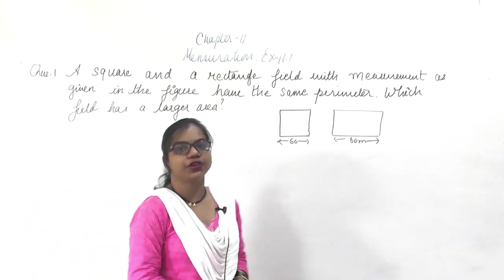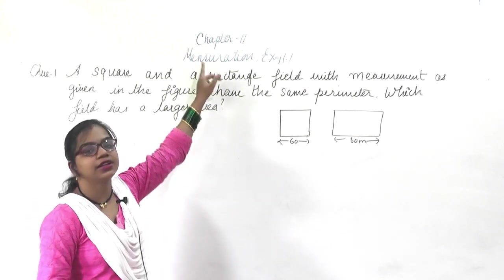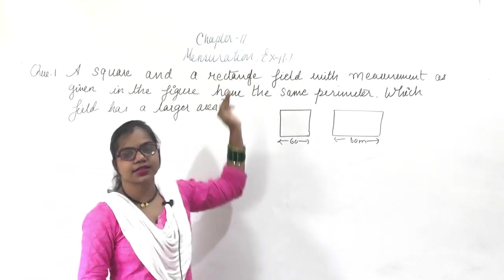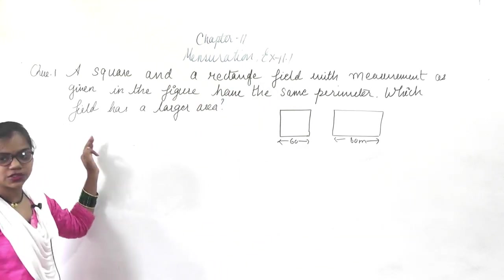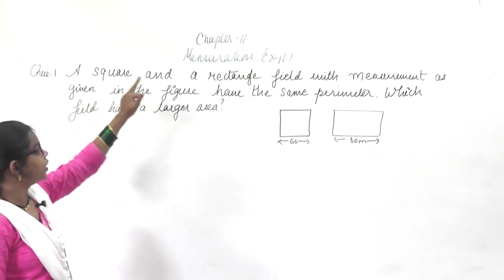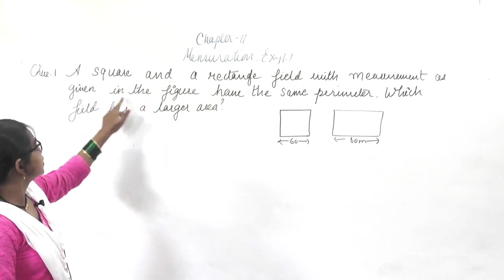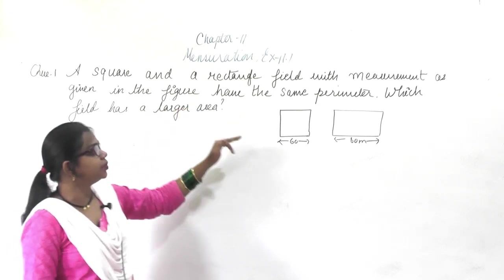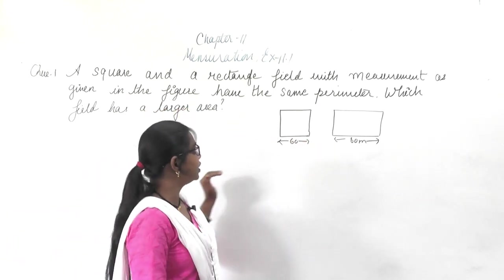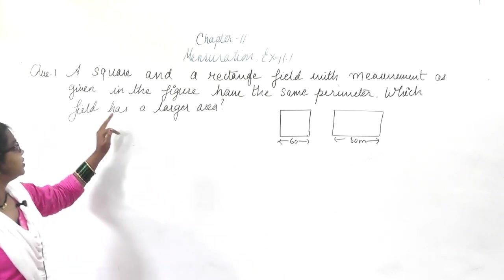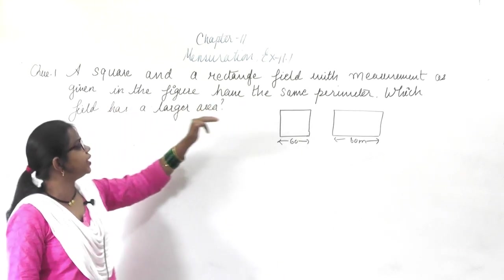Good morning all of you. Today we are going to start a new chapter, that is chapter 11 mensuration. This is exercise 11.1. Here in the first question it is saying a square and a rectangular field — measurements are given in the figure. This is a square and rectangle, and second, they have the same perimeter.